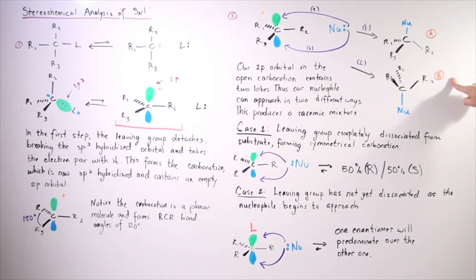And that means we'll produce 50% R enantiomer and 50% S enantiomer. So, if A is S and B is R, we'll have 50% of A and 50% of B.